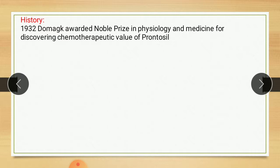Looking at the history: in the mid-1970s, the development of the combination of trimethoprim and sulfamethoxazole and its usefulness in treatment and prophylaxis of certain microbial infections led to a resurgence in the use of some sulphonamide. In 1932, Domagk began to study a brilliant red dye later named Prontocil.